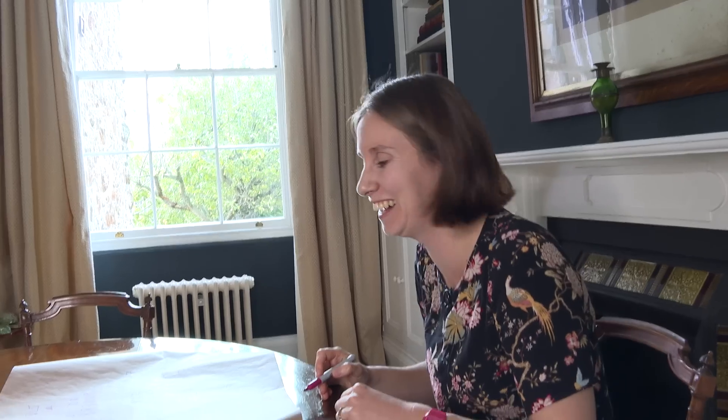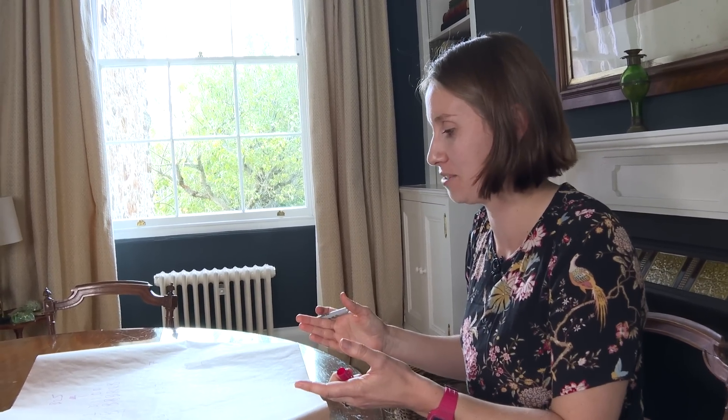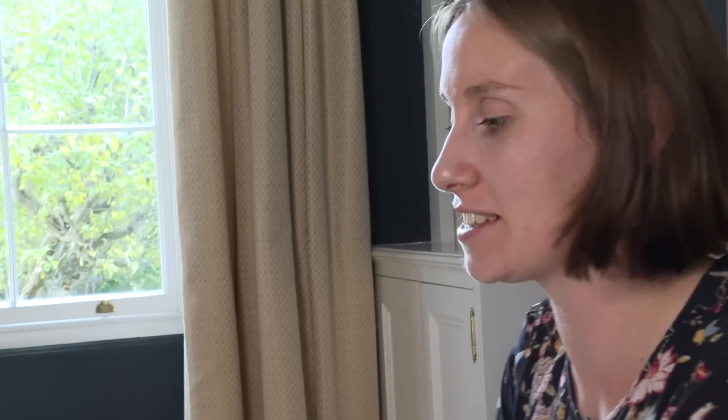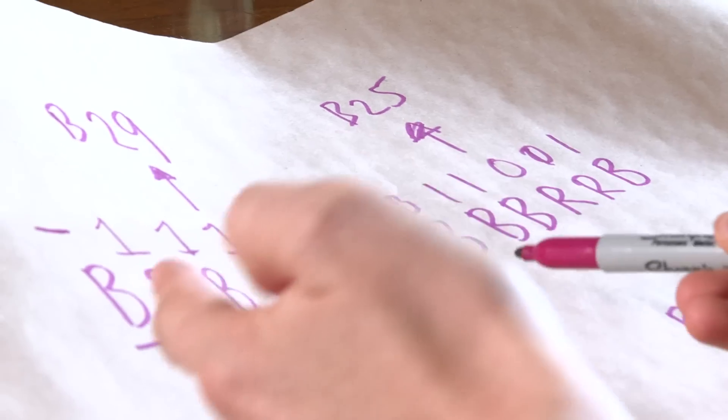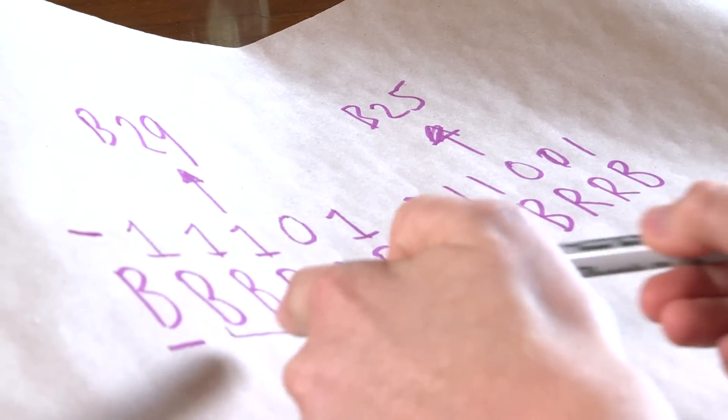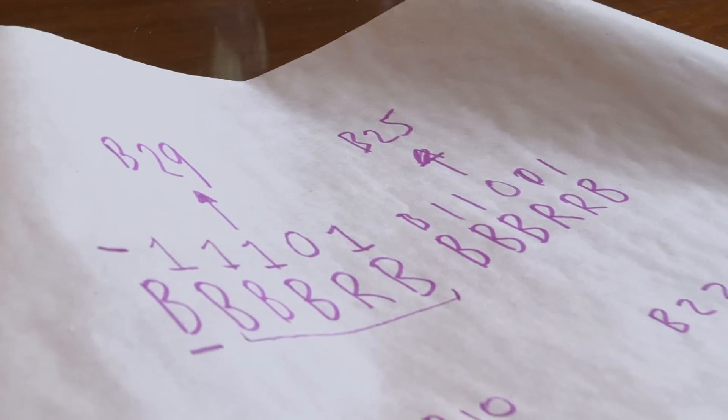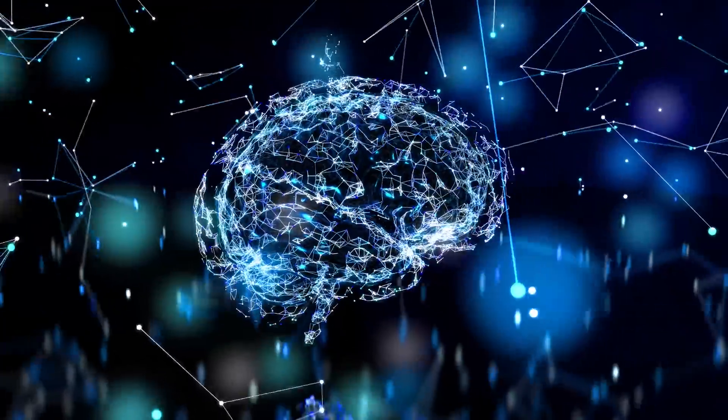It almost feels like it would be easier just to remember the 52 cards. Definitely not. The key is that I'm condensing the information — base 10 is much more efficient than binary, and black and reds are effectively binary. So I'm condensing five or six digits down to one or two digits.